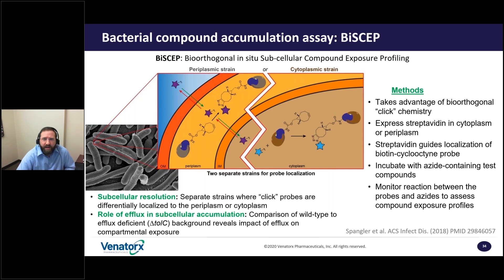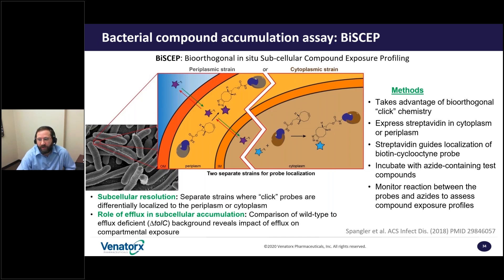This allows us to fix the cells and do mass spectrometry to identify how much compound got into each of the subcellular localizations. We can also analyze these cells with wild-type efflux or with an efflux knockout, just as Jessica described. This was a really valuable tool at Novartis, but of course it was limited to azide-containing compounds. In addition, it was a fixed endpoint assay that needed seven minutes per sample to run on the LC-MS. Fortunately, my future colleagues at Venatorix read this paper with interest.